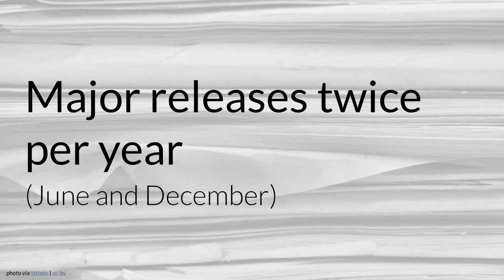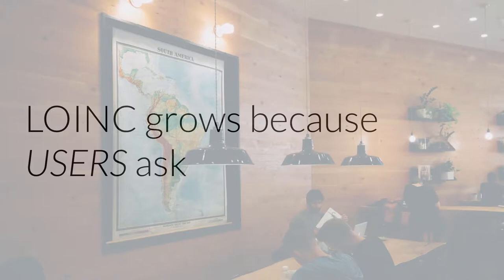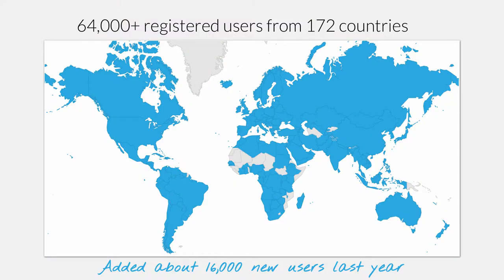LOINC publishes two major releases each year, June and December. We just released our June one last Friday, so I'm glad I could make it here alive and it went out successfully. Look for another one in December. We keep adding content based on end user requests — the new items added are all driven by the LOINC user community who makes requests when they find gaps in the terminology. Today there are about 64,000 users of LOINC coming from about 172 different countries, and last year about 16,000 new users were added.